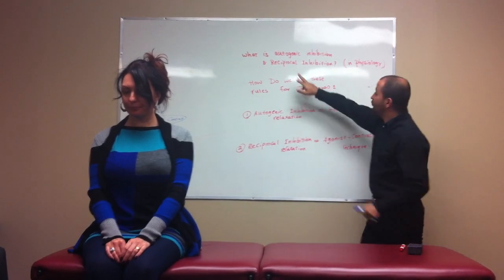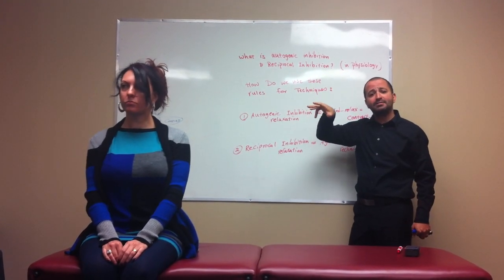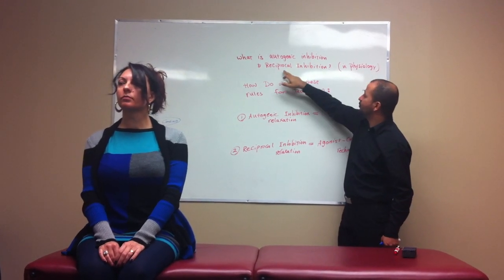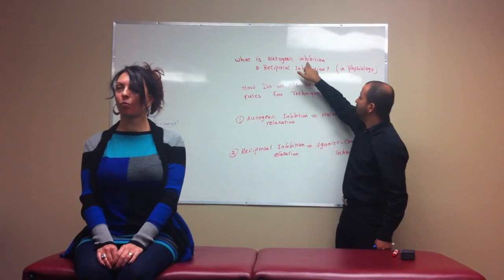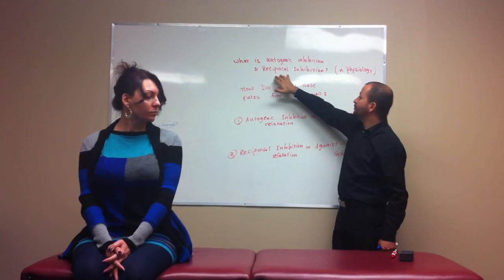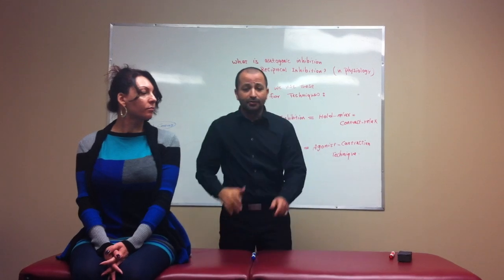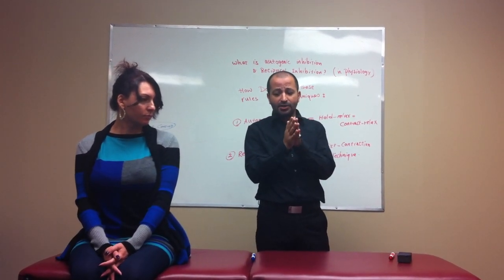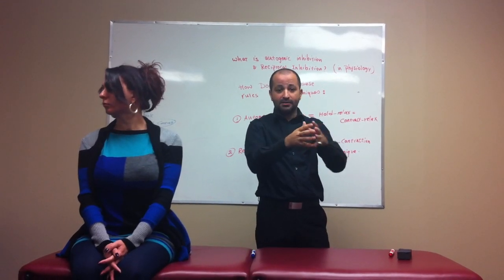First of all, we need to understand what autogenic inhibition is, because Sandy sent me one link, everybody else sent me a link — there is a little bit of confusion here. Autogenic inhibition and reciprocal inhibition — what are these two things? Reciprocal means opposite. Autogenic means the same muscle.